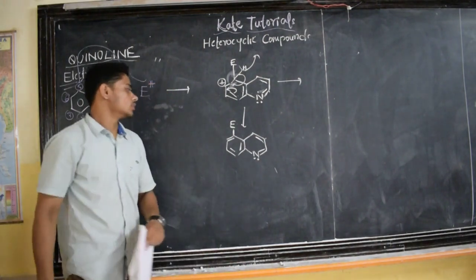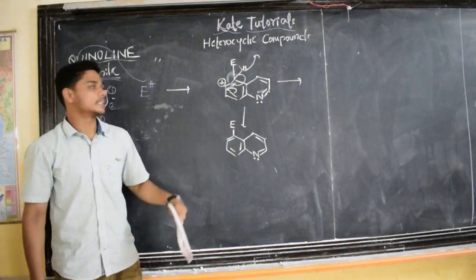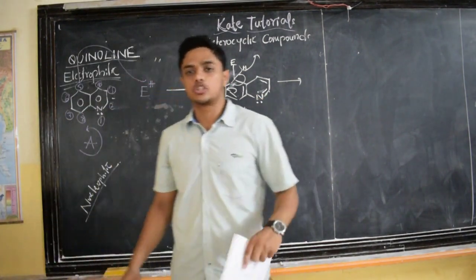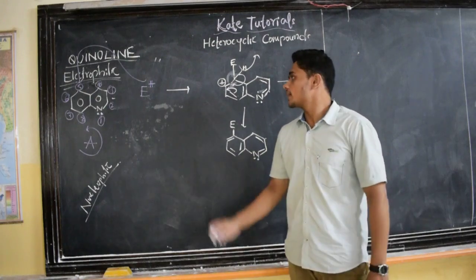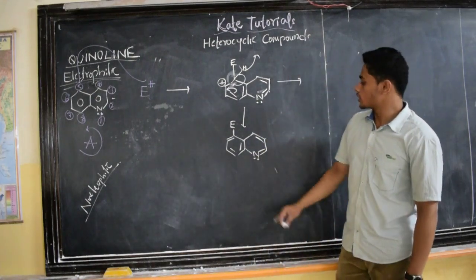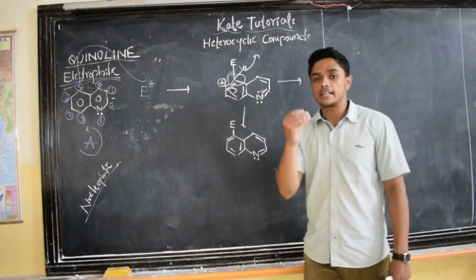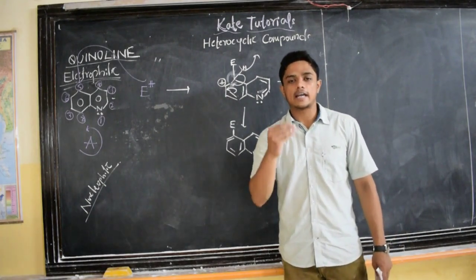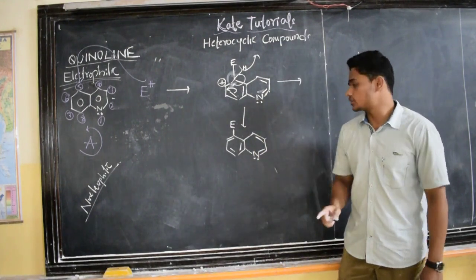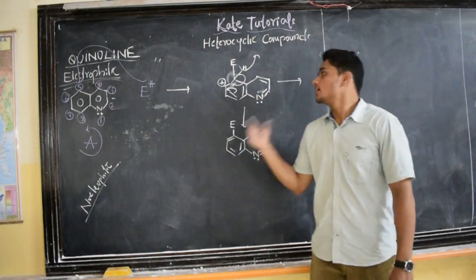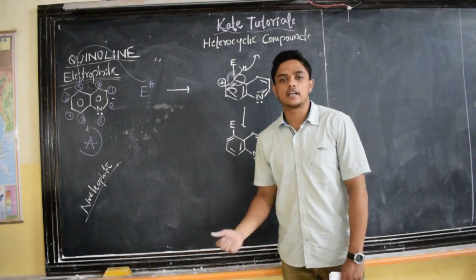Like this it attacks. If you write the canonical structures, you will understand that nitrogen does not get any positive charge. So at 5th and 8th position it will be stable compared to any other position. Similarly for nucleophile, those are going to attack here at second position. Because when nucleophile attacks at second position, nitrogen is going to get negative charge. We know that nitrogen is electronegative and it has capacity to hold that negative charge. But it can't hold positive charge. That is about electronegativity. In the next class we shall discuss how to synthesize it in our classroom.